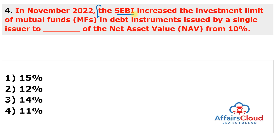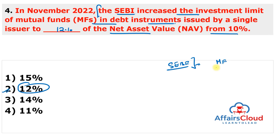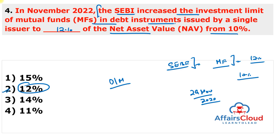Question 4: In November 2022, SEBI increased the investment limit of mutual funds in debt instruments issued by a single issuer from 10% to 12% of net asset value, effective from 29th November 2022 for all new schemes. Existing schemes will be exempt until the majority of underlying debt and money market securities mature. This circular was issued under Section 11 of the SEBI Act of 1992. Remember, SEBI was established in 1988 but the SEBI Act came into force in 1992.